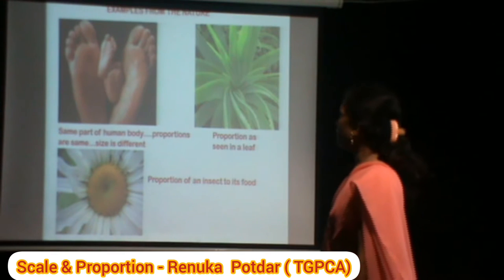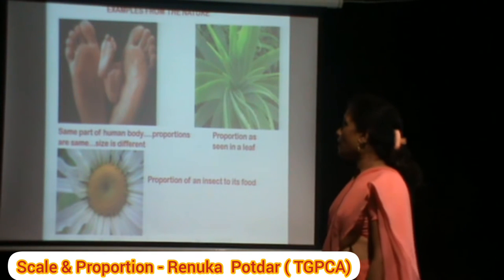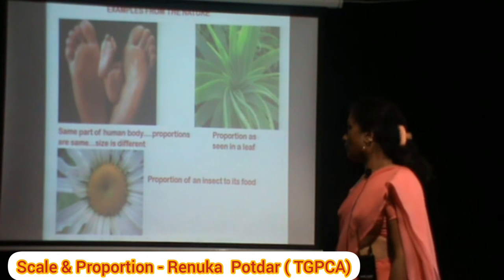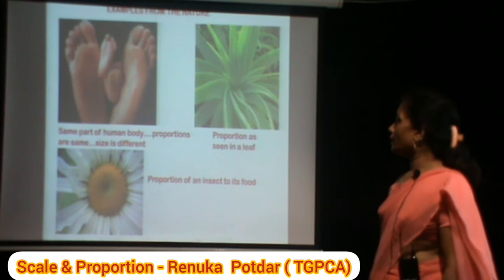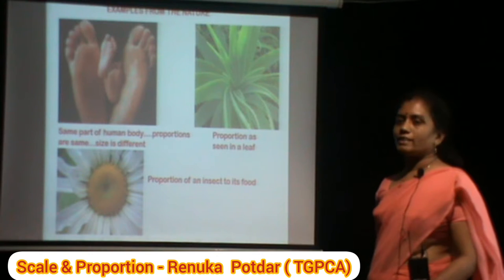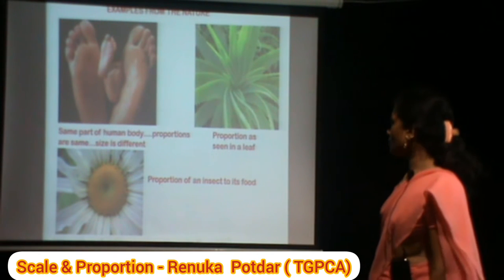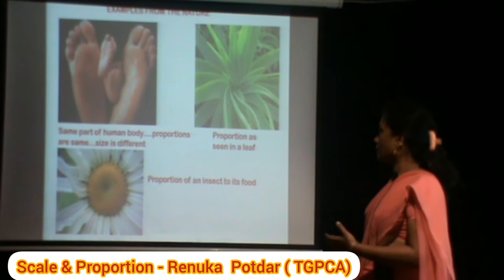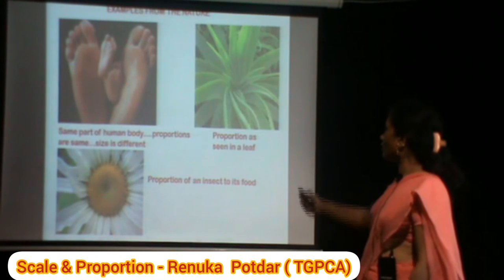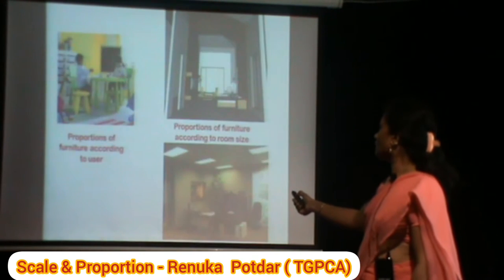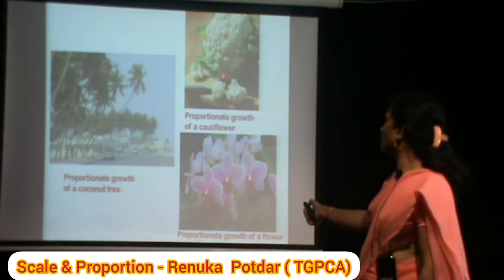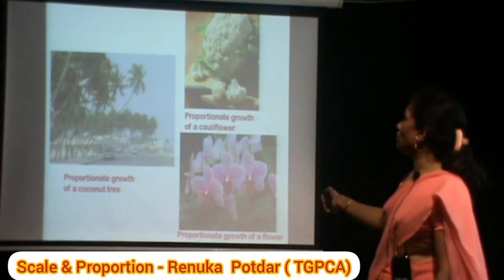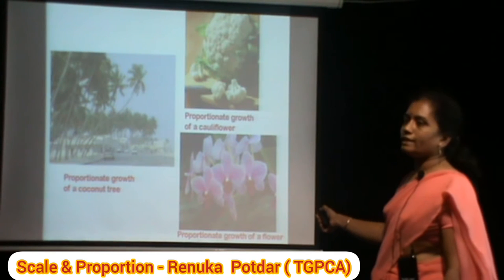Examples from nature: the proportion of the human body can be measured using a part of the body throughout its whole life. The same part of the human body remains proportionally constant even if the overall size varies. For instance, the proportion of a petal flower compared to the whole flower remains the same.